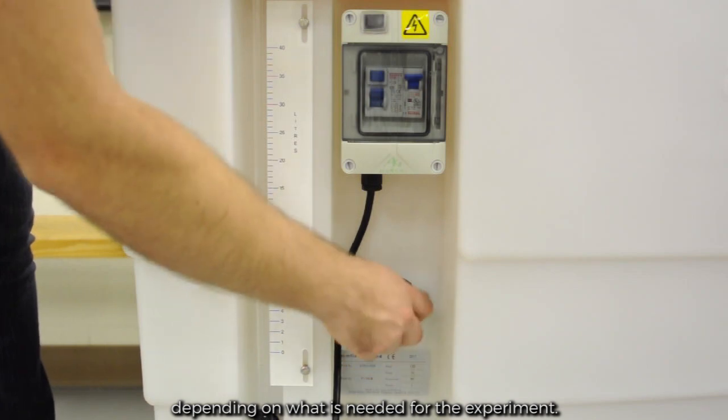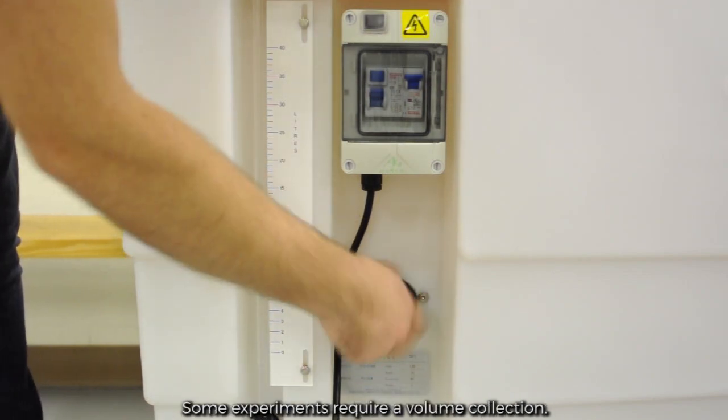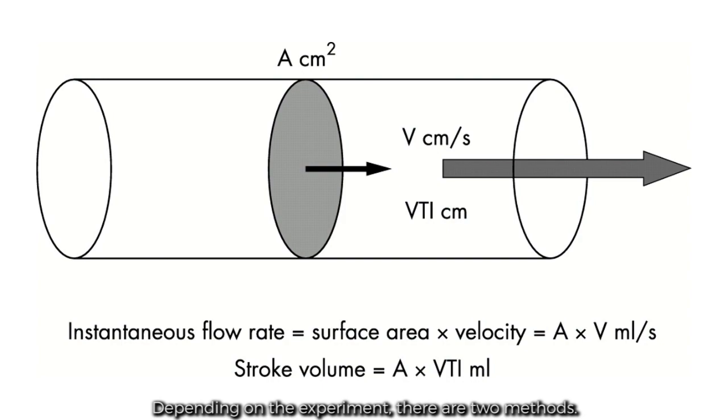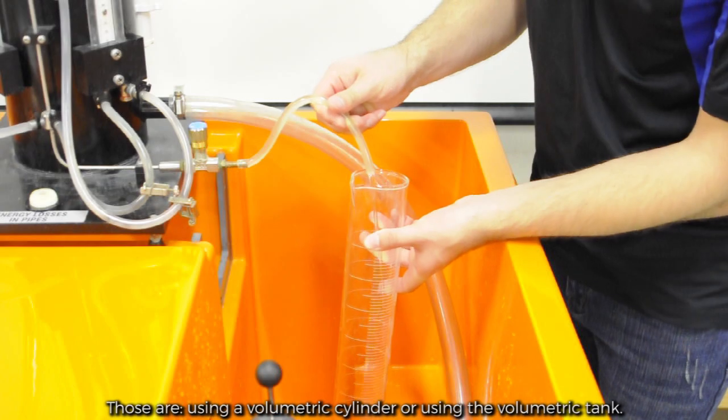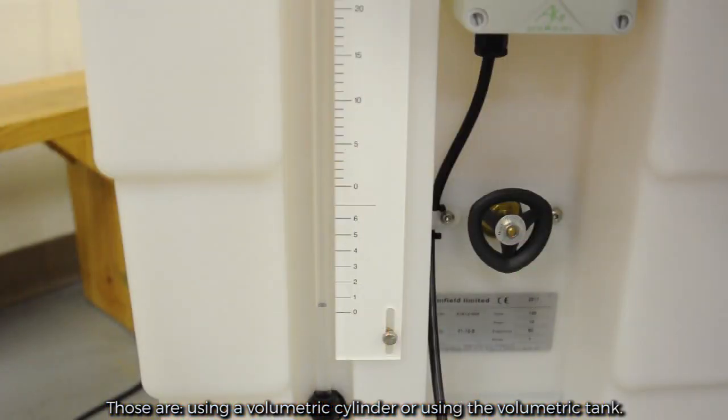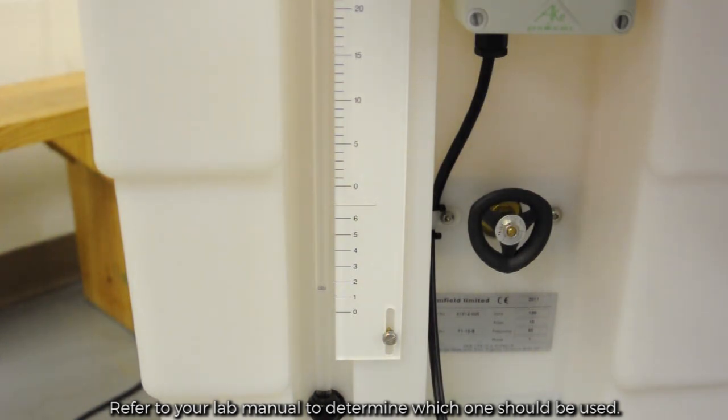Depending on what is needed for the experiment, some experiments require a volume collection. Depending on the experiment, there are two methods: using a volumetric cylinder or using the volumetric tank. Refer to your lab manual to determine which one should be used.